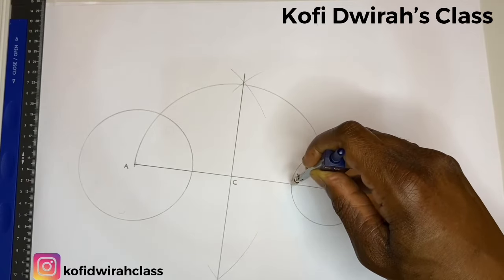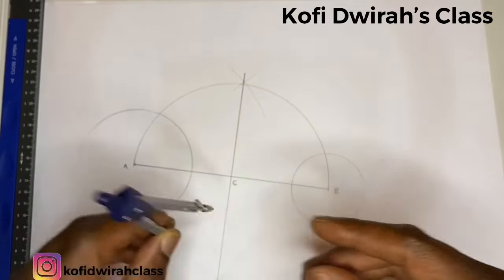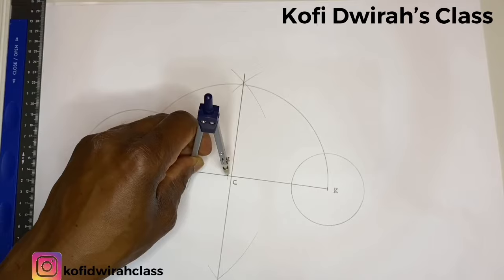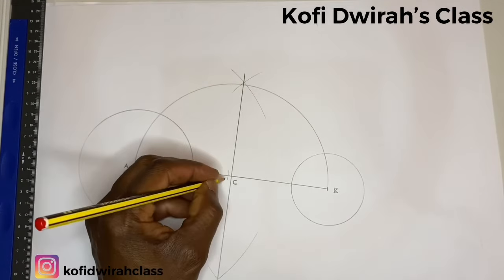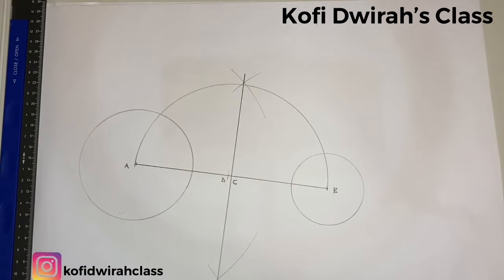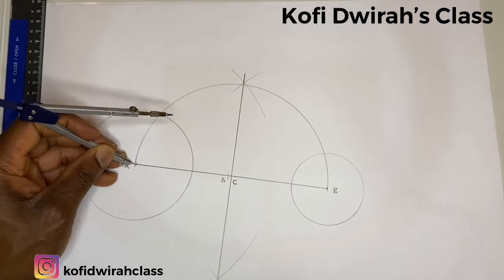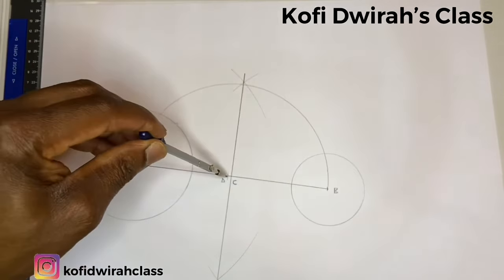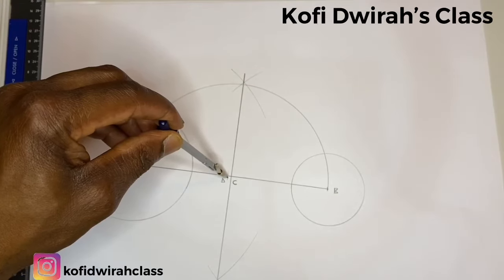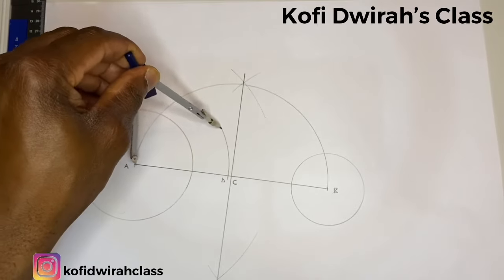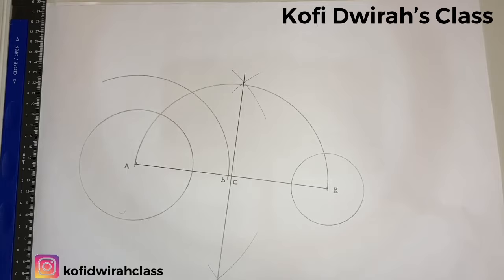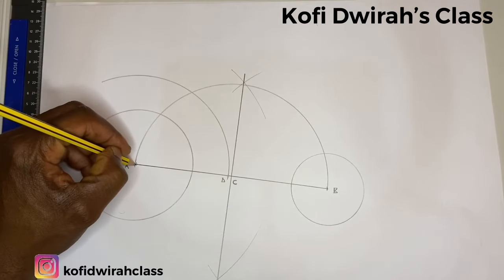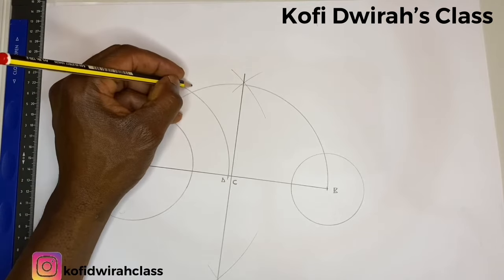The radius of the smaller circle, you measure it like this. Then you add it to the bigger circle, so it's here. So we have this point to be D. Then from A, you open the compass to D, then you draw an arc. Then you draw a straight line from A to this point, point E.